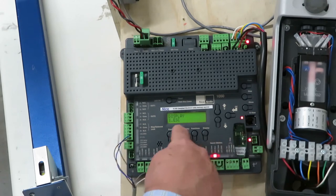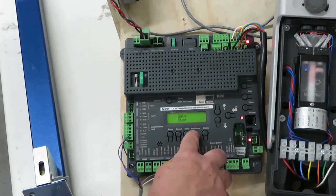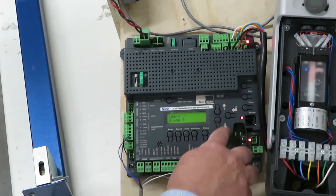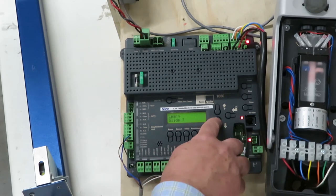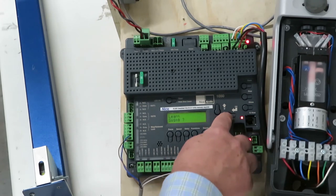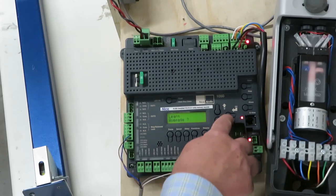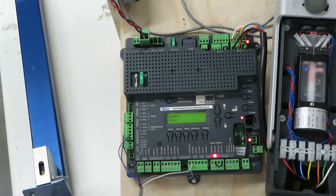So I'm going to hit display and then escape to get back to this. Now we're ready to learn the limits. So we're going to go function learn. Okay. This is a pretend swing gate. So okay. It's an average size pretend swing gate. So we're going to hit okay. And we're going to start the learn process. So now the motor goes through its motions to find the open and close limits where the switches are set on the motor.